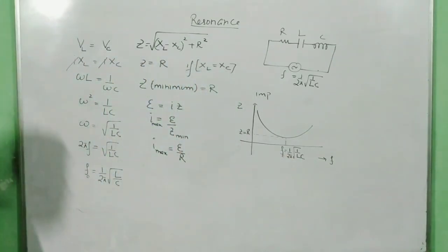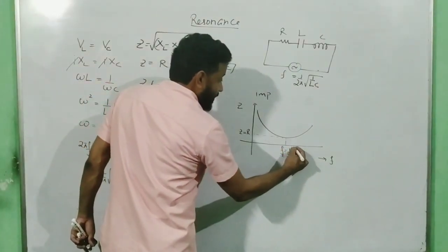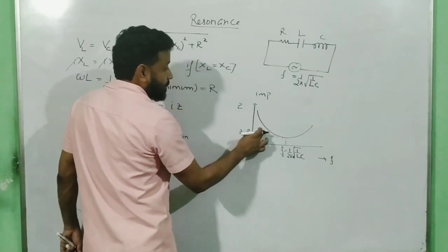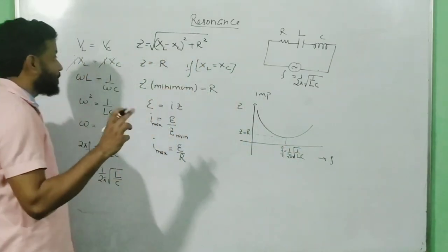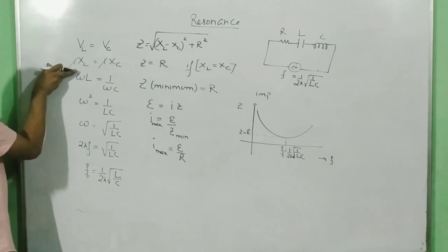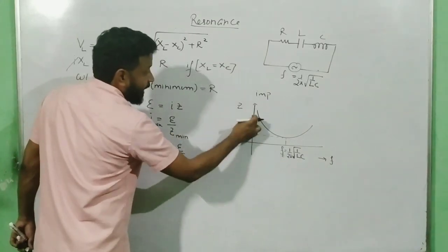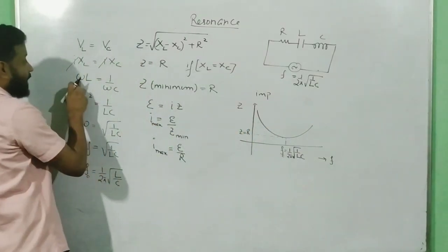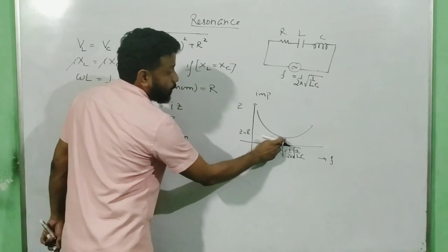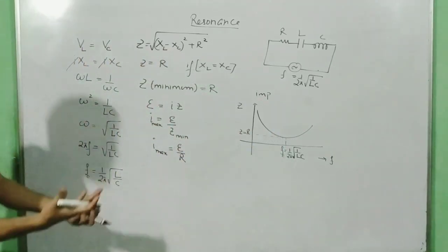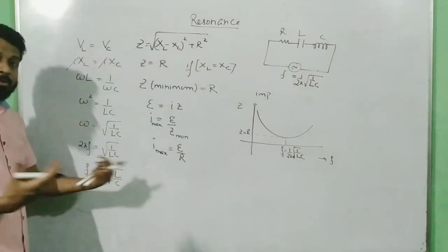At F naught the impedance is minimum. If you decrease the frequency from resonance, impedance again increases. If you increase the frequency beyond resonance, impedance again increases. This is because XL is directly proportional to frequency and XC is inversely proportional. They nullify each other only at F naught.